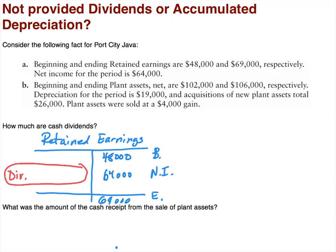We're going to do a mathematical equation here to solve for dividends. Retained earnings carries a normal credit balance, so we take credits minus debits equals ending. Rearranging: $48,000 beginning plus $64,000 net income, less the ending retained earnings, gives us dividends. In this case, dividends — the debits — are $43,000.